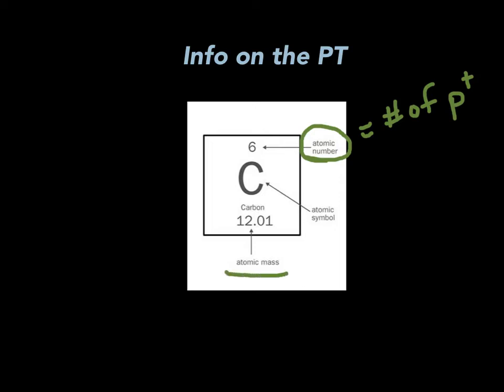The other thing is it also has an average atomic mass. I'll add 'average' on here because this is an average of all the naturally occurring isotopes, which we'll talk about later. We don't have a mass of 12.01 — we'll be given a mass number later on. But this is important information to know from the periodic table, mostly the atomic number.